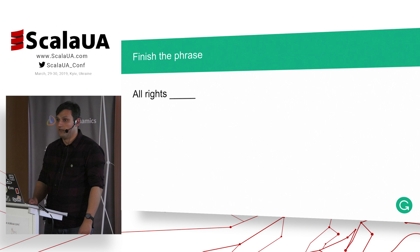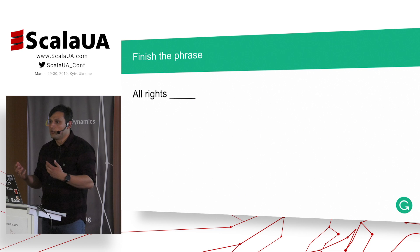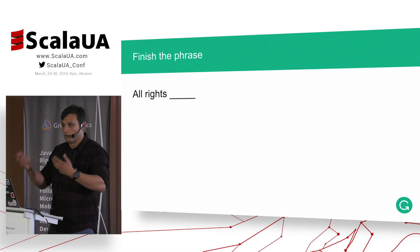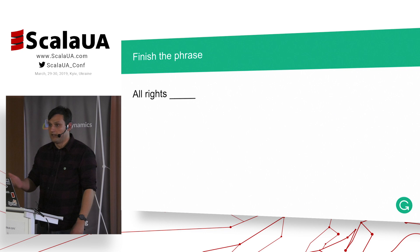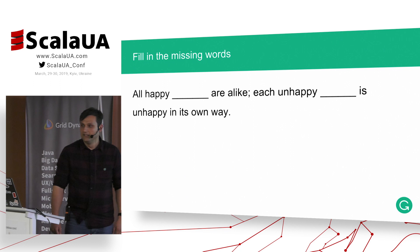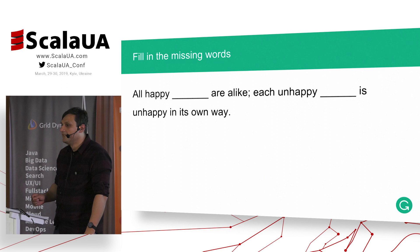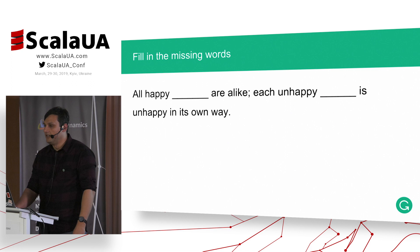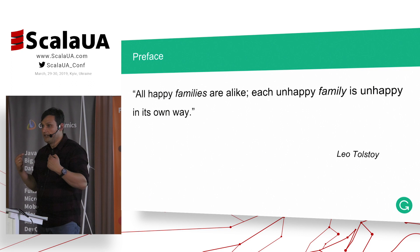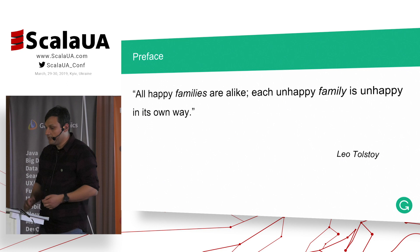Let's play a small game. Could you finish the phrase 'preserve'? How many of you said 'reserved'? Probably half. This is actually how a language model works — when you hear some start of a sentence or phrase, you can guess the next word. Let's try a more complicated example: fill in the missing words. Someone said 'family'? It's Leo Tolstoy — you know this because you read it, your language model is trained, you memorized it.